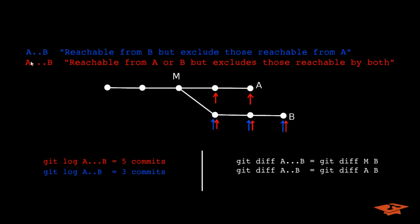In the double dot notation, I had to write this all down and put it in a graphic because I cannot remember it even to this day. I reference this graphic, so I encourage you to do the same thing if you also have a terrible memory like me. So A double dot B means commits reachable from B but exclude those reachable from A.